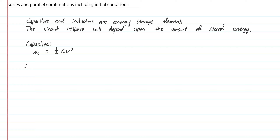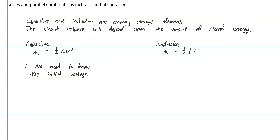To analyze capacitor networks we need to know the initial voltage. For inductors, the energy is one half Li squared, and so we need to know the initial current.